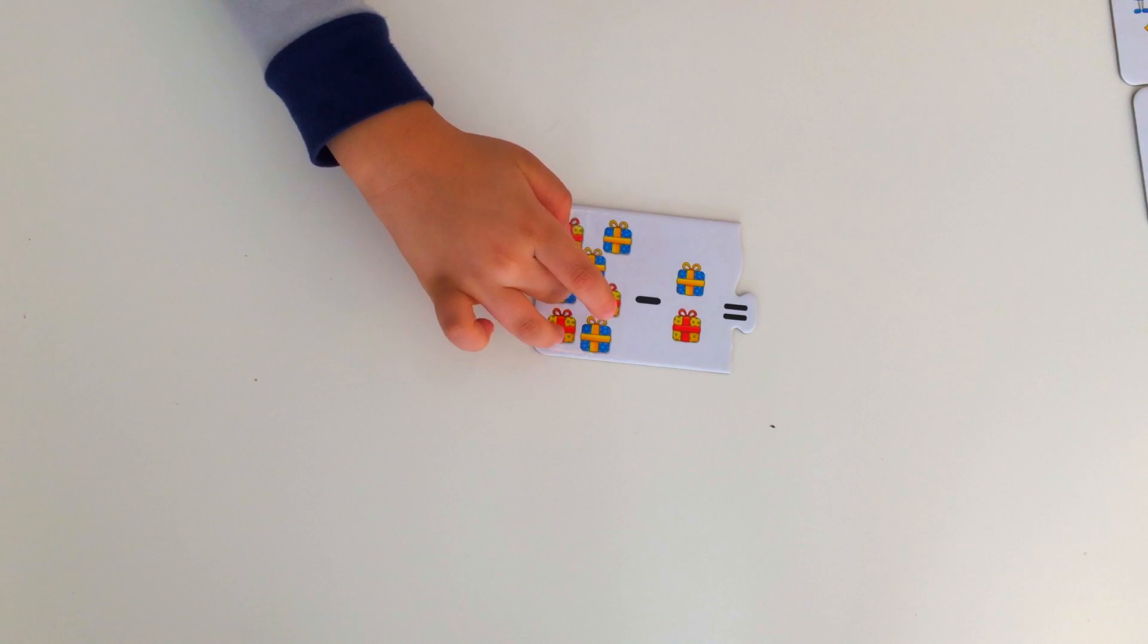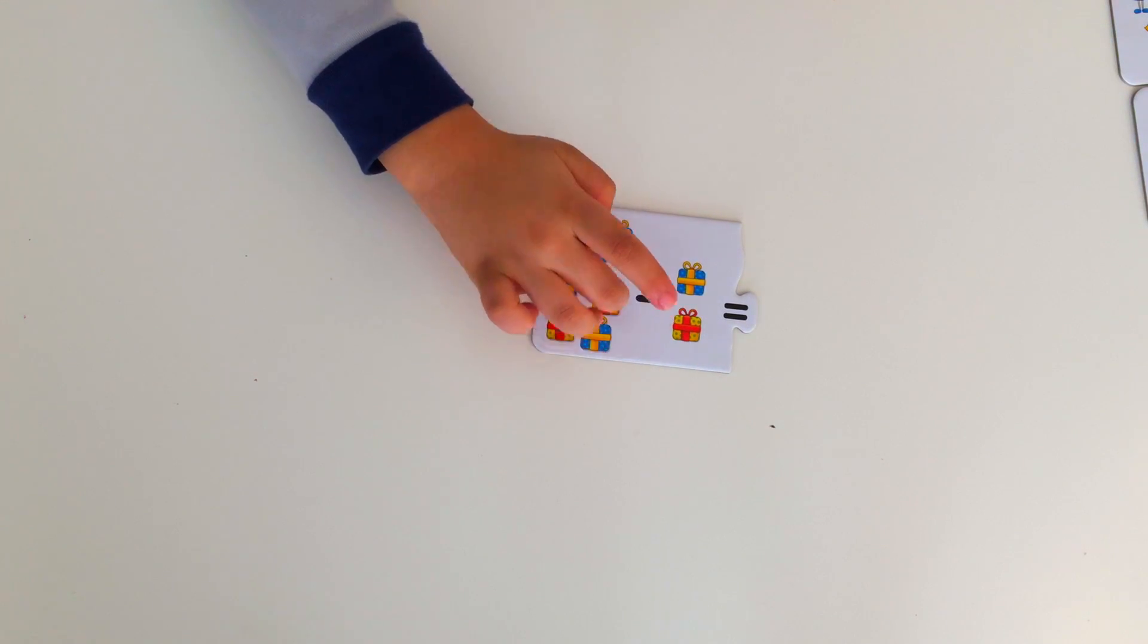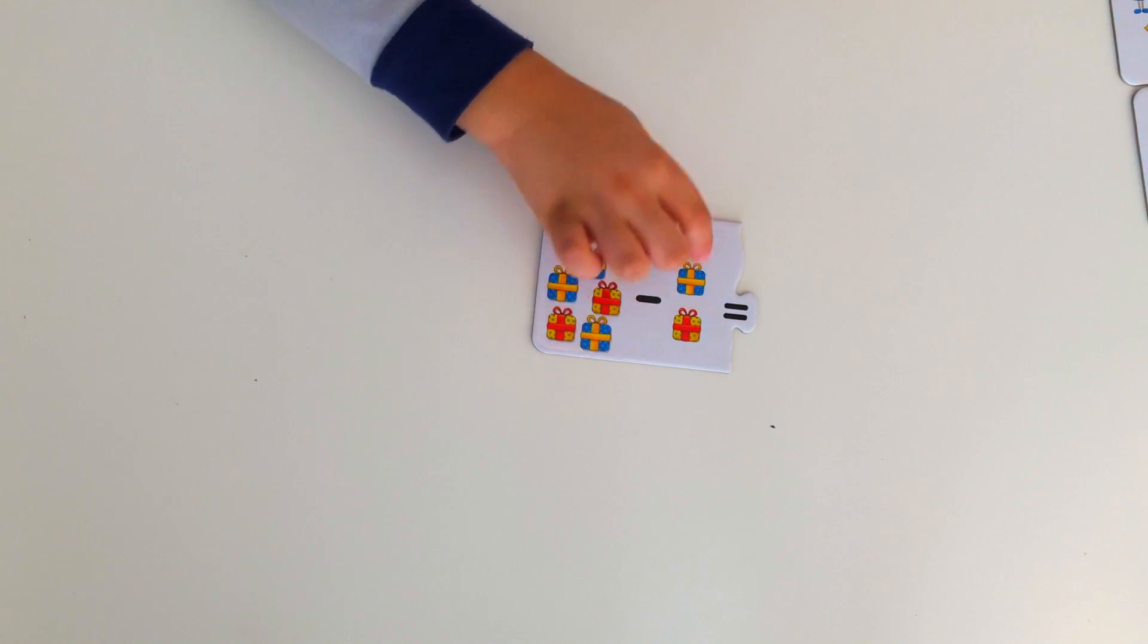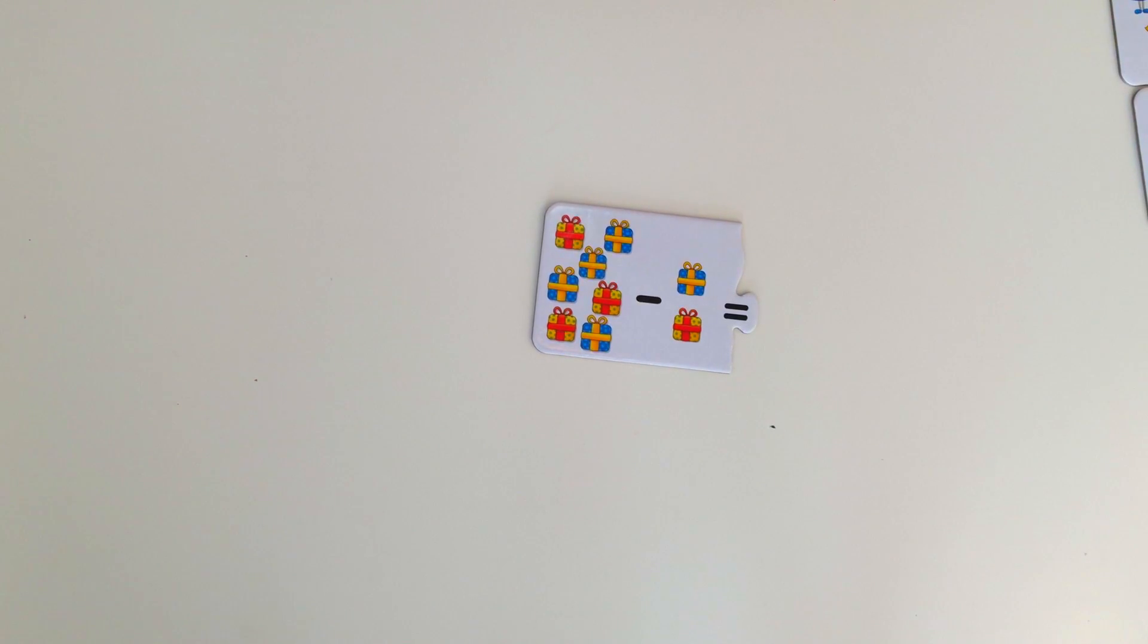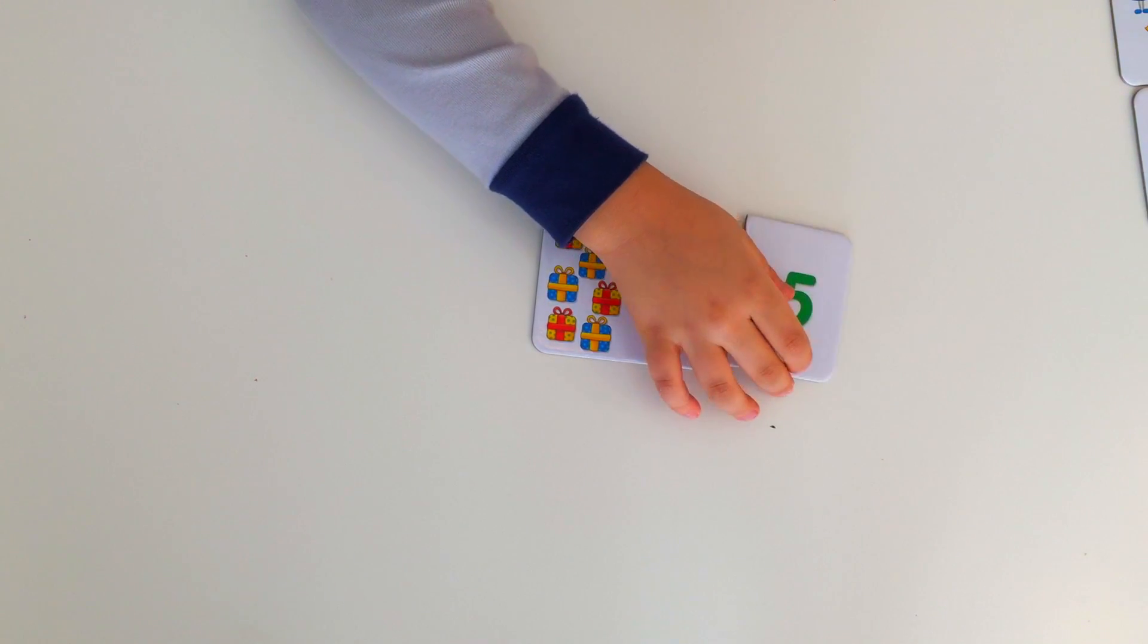One, two, three, four, five, six, seven. Seven minus two is five, so there's five presents left.